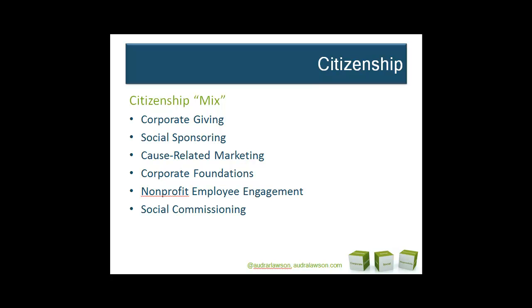Social commissioning describes targeted partnerships with nonprofit organizations in order to support public initiatives through business objectives — for example, partnering between organizations and education institutions to create apprenticeships. There are also Commonwealth Joint Ventures, or public-private partnerships, which denote a joint enterprise between a nonprofit and a company where both partners contribute resources and know-how that neither could perform alone.